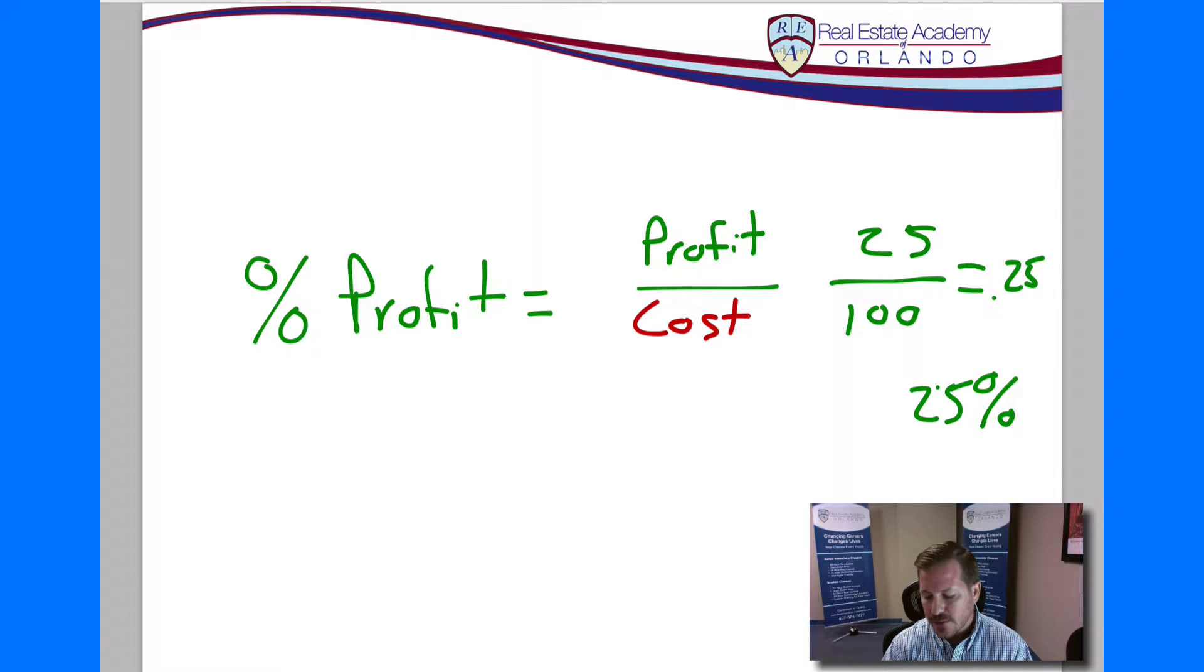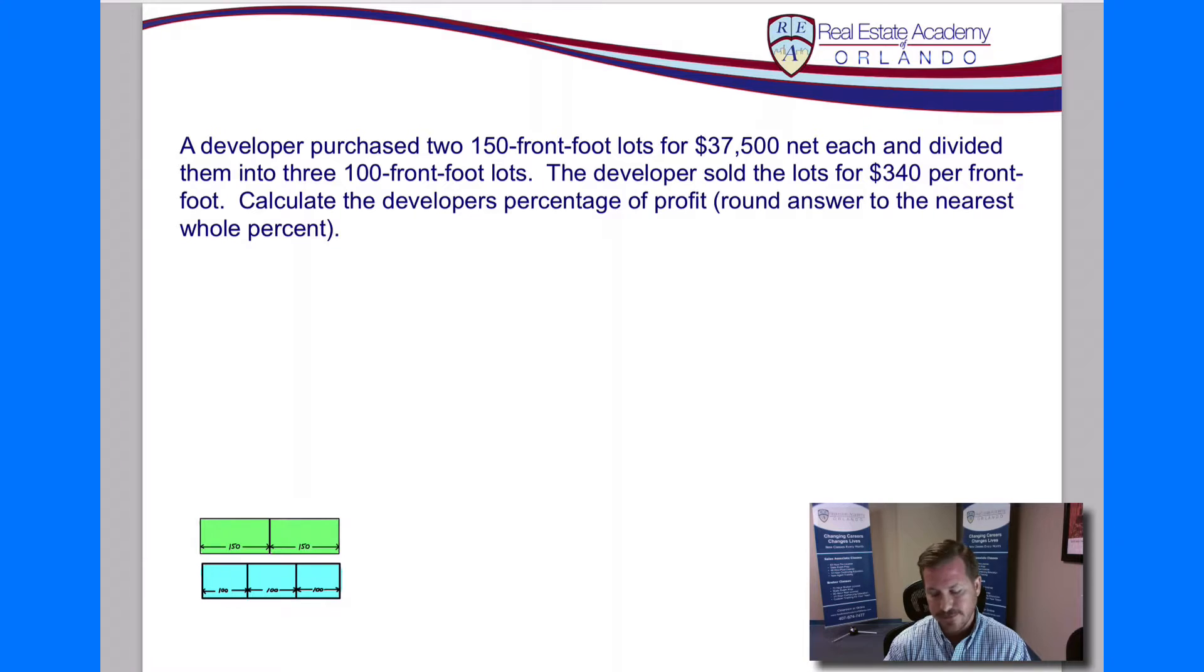So that is the formula that we're going to use ultimately to solve the question here. Now, let's take a look at the math problem we have. A developer purchased two 150-front-foot lots for $37,500 net each and divided each of them into three 100-front-foot lots. The developer sold the lots for $340 per front foot. Calculate the developer's percentage of profit rounded to the nearest whole percent.